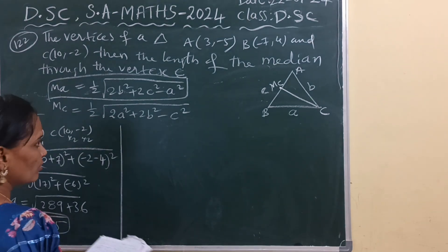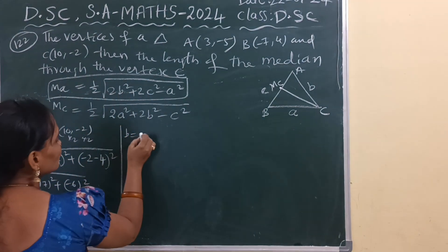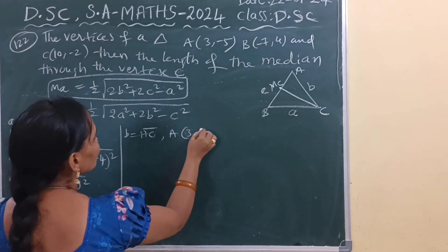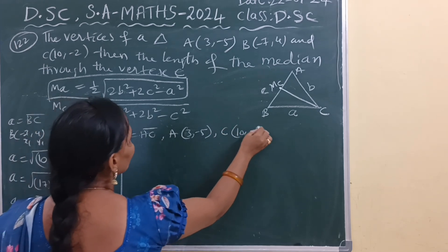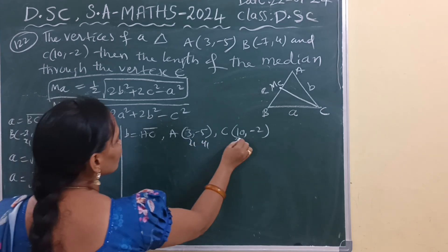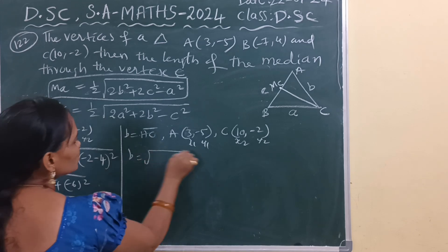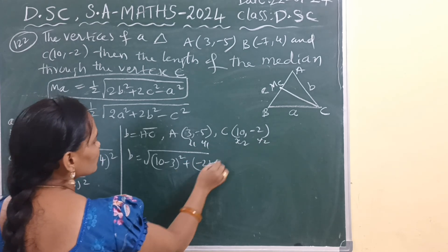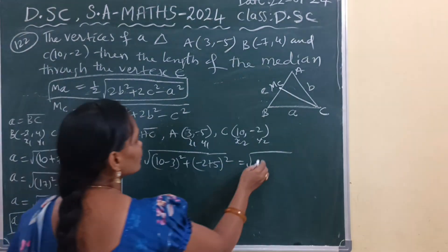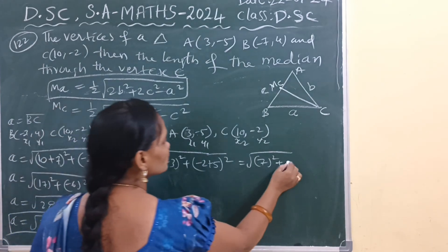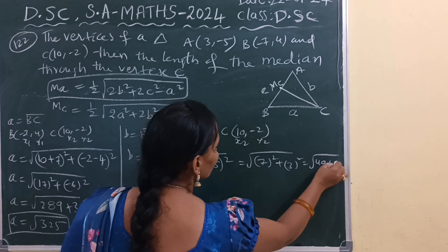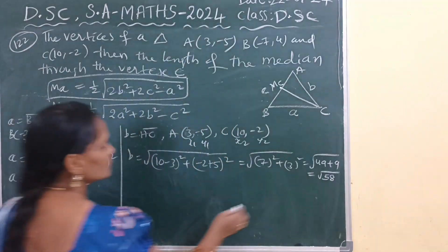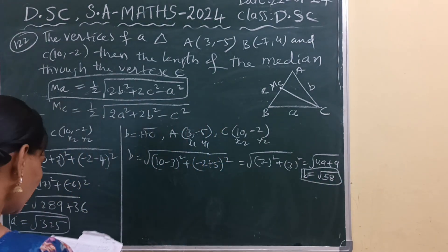For side b, we find distance AC. A is (3, −5) as X1, Y1 and C is (10, −2) as X2, Y2. Using the distance formula: b = √[(10−3)² + (−2−(−5))²] = √[7² + 3²] = √[49 + 9] = √58. So b equals square root of 58.